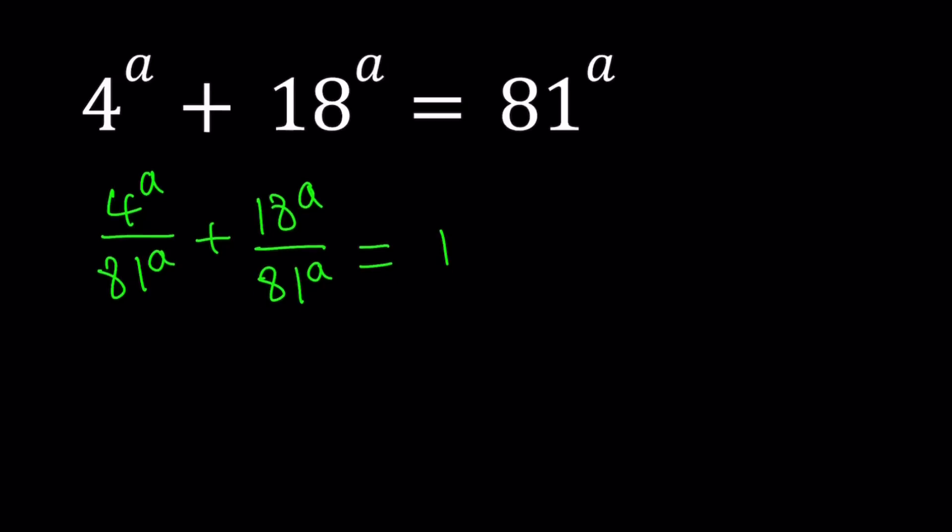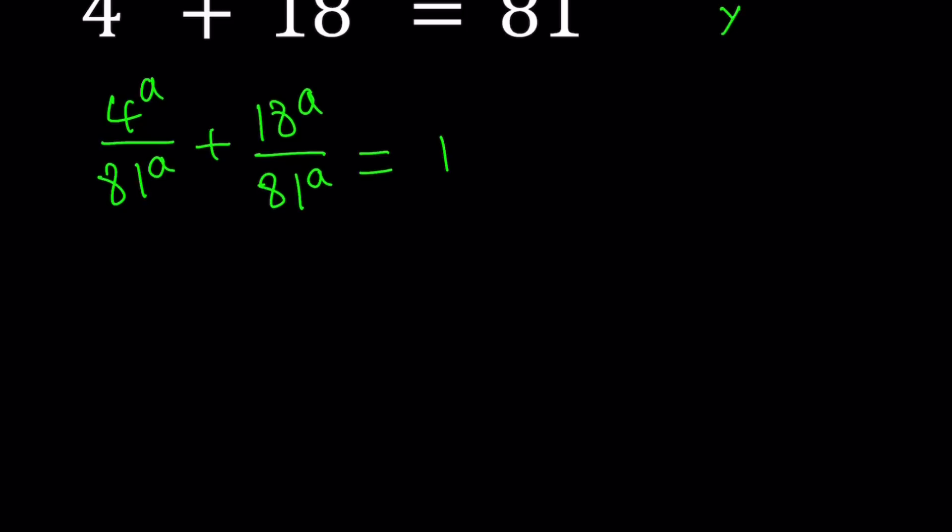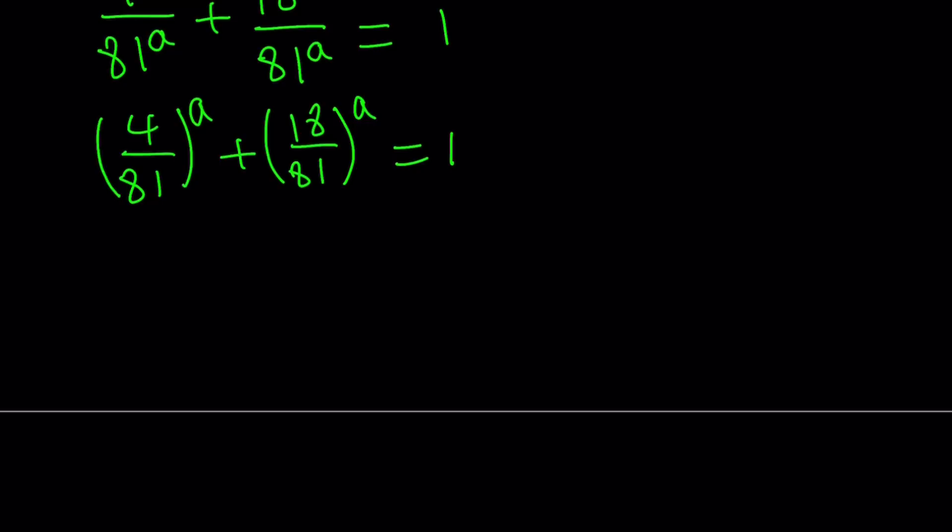So how do we simplify this? I have x to the power a divided by y to the power a. I can definitely write it as x over y to the power a. By using that property, we can write this as 4 over 81 to the power a plus 18 over 81 to the power a, and that equals 1. Now, 18 over 81 can be simplified. 18 over 81, the common factor is 9. If you divide both the top and bottom by 9, you're going to get 2 over 9.